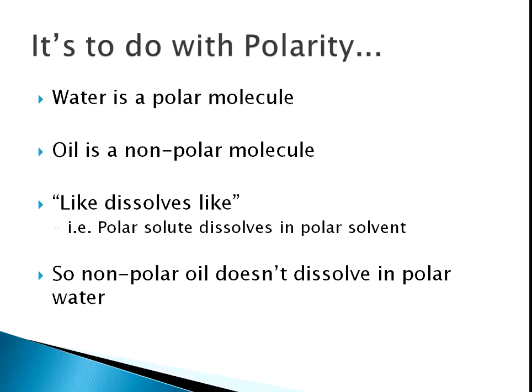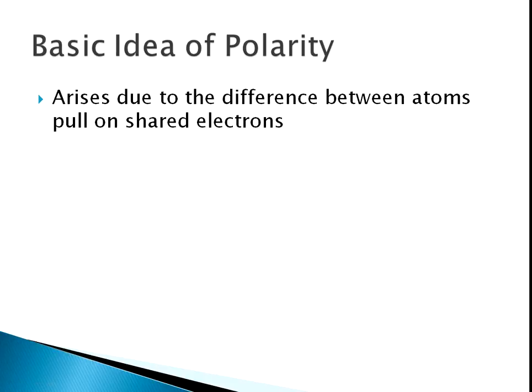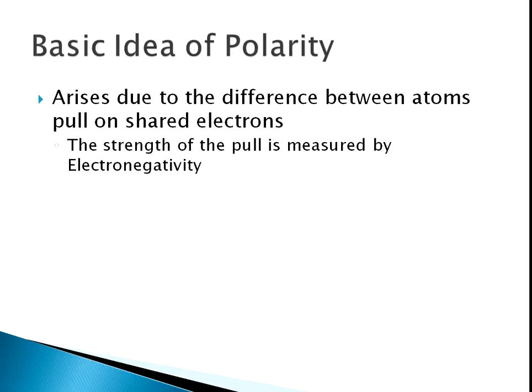But first, we have to look at what it actually means to say that a molecule is polar. So let's look at the basic idea of polarity. It's quite a simple idea. Polarity arises due to the difference between atoms' pull on shared electrons. And we measure the strength of the pull that an atom has on shared electrons by a thing called electronegativity.